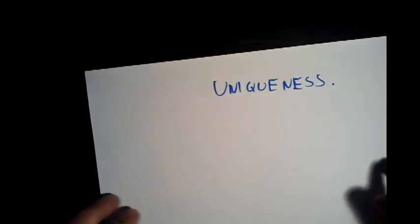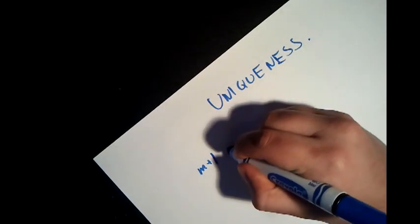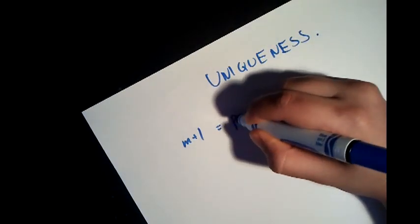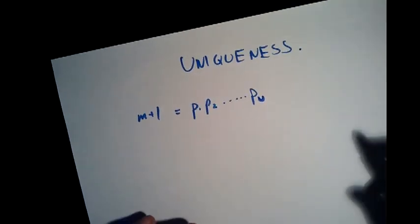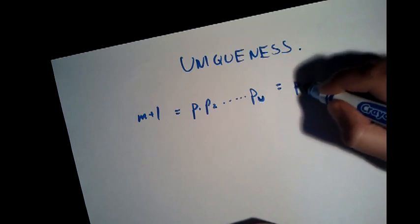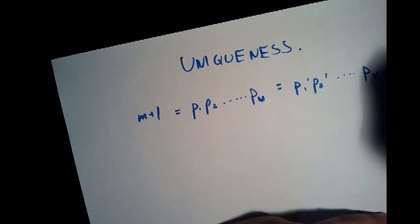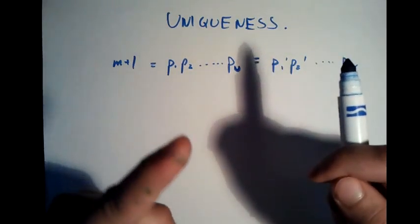Now we're going to try to prove the next part of the theorem, which is that the factorization is unique. Uniqueness is actually really important in mathematics — I might do a video on uniqueness at some point. So we're going to prove uniqueness. We'll say that m plus 1 equals p1·p2·…·p sub u, and we assume there's also another prime factorization: p1'·p2'·…·p sub v. Our goal is to prove that these two are the same, which means there's only one prime factorization.